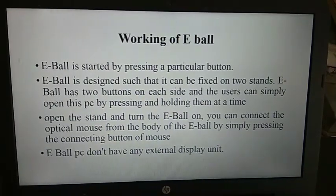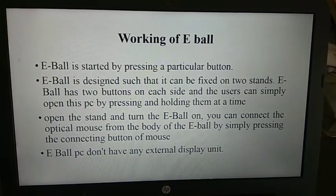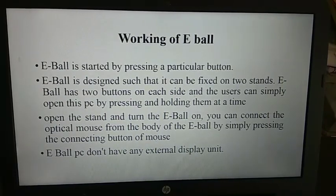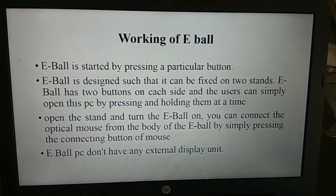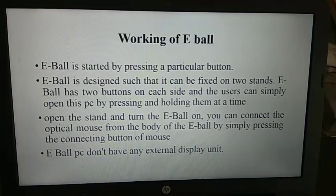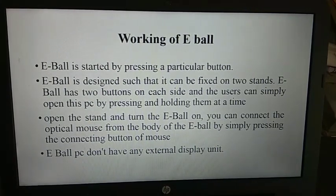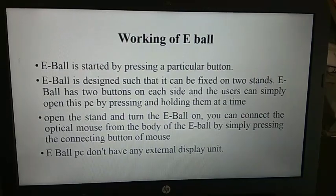The E-Ball is designed such that it can be fixed on two sides. It has two buttons on each side and the user can simply open this PC by pressing and holding them at the same time, then open the stand and turn the E-Ball on. You can connect the optical mouse from the body of the E-Ball by simply pressing the connecting buttons of the mouse. The E-Ball PC does not have any external display unit.